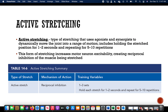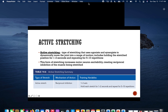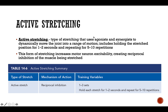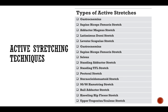Active stretching involves one to three sets of five to ten reps, holding the end range for one to two seconds. The difference from static is that instead of a 30-second hold, you move through the range of motion and hold for one to two seconds at the end range. This creates motor neuron excitability and reciprocal inhibition of the muscle being stretched — turning off the antagonist and turning on the prime mover.